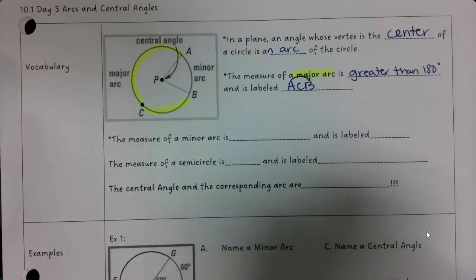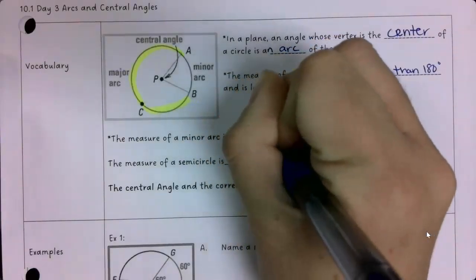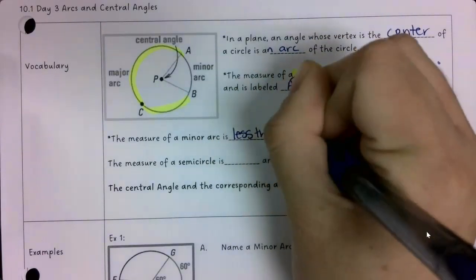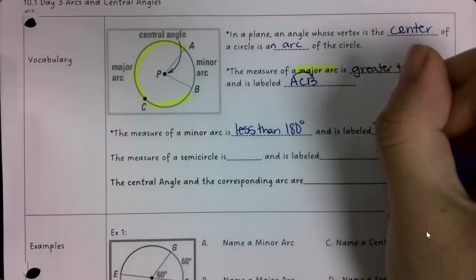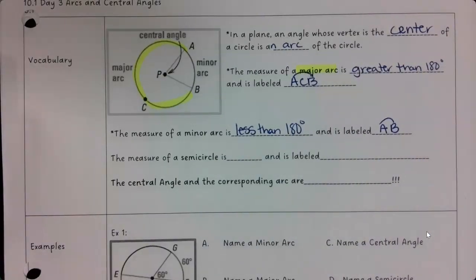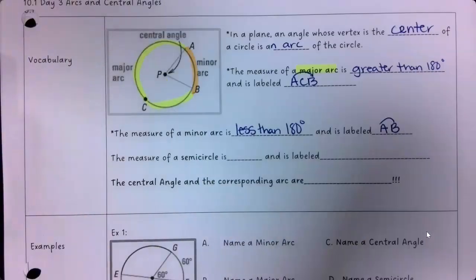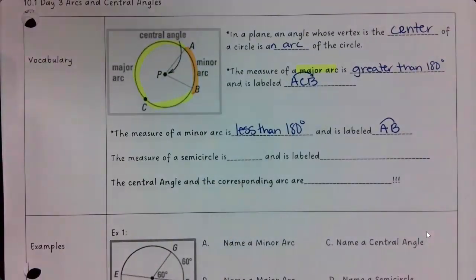The measure of a minor arc is less than 180 degrees. And this one would be just labeled with two letters AB. Because it's going from A to B. So whenever you see two letters you just assume it's smaller.